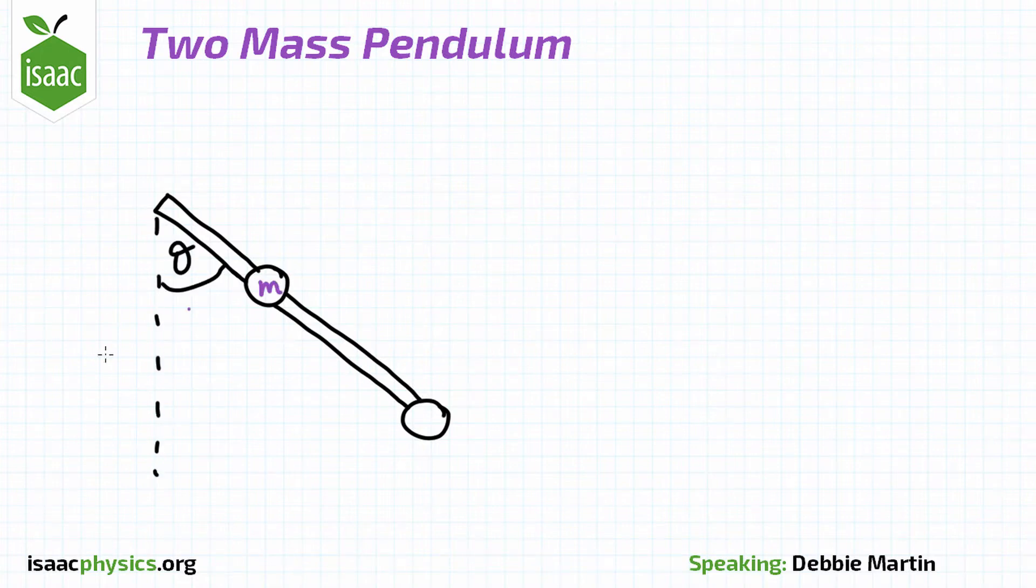The first has mass little m and is a distance x from the fixed end. The second has mass big M and is the total length of the rod L from the fixed end.